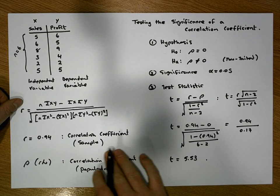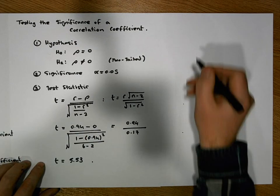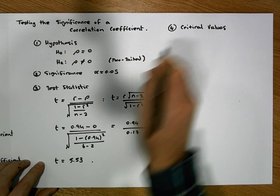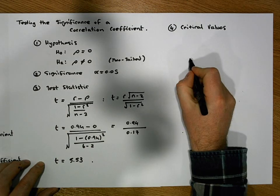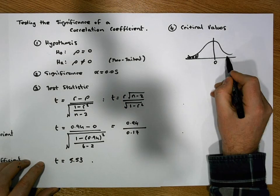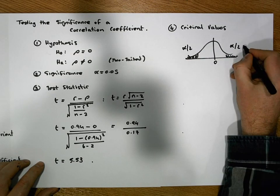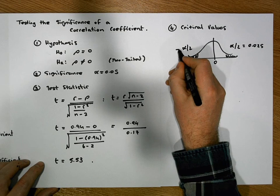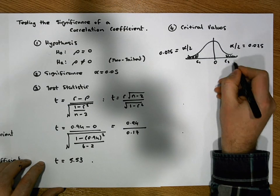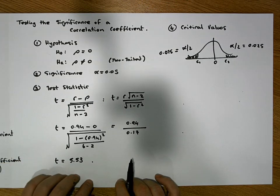The next stage is to calculate the critical values for the t distribution. Step four: critical values. This is modeled by a t distribution centered on zero. It is a two-tailed test, so we have alpha over two in each tail, which is 0.025 on the left and 0.025 on the right. We need the critical values that have 0.025 of the area in each tail.